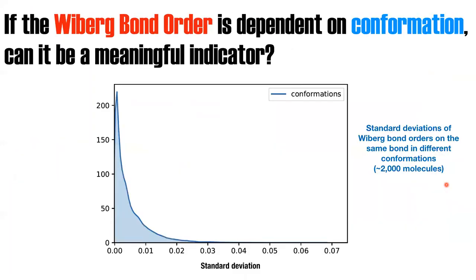If the Wiberg bond order tells us a lot about chemical environments through its dependence on conformation, can we actually use it as a meaningful indicator? To answer that question, I looked at the standard deviation of the Wiberg bond orders with respect to conformation. The distribution of standard deviations over different molecules for their conformations shows that most standard deviations with respect to conformation fall below 0.02 — so the differences are not that big.